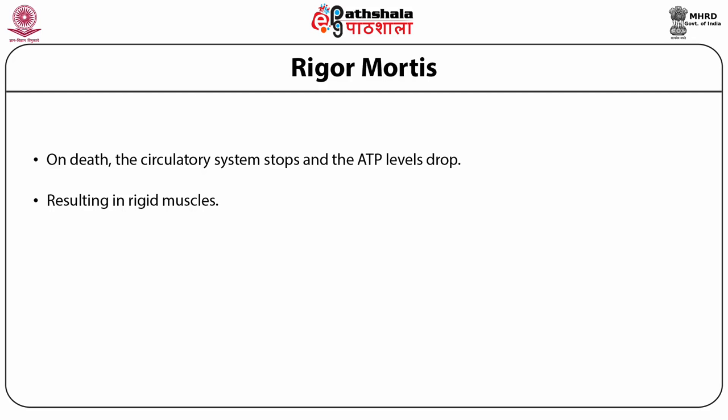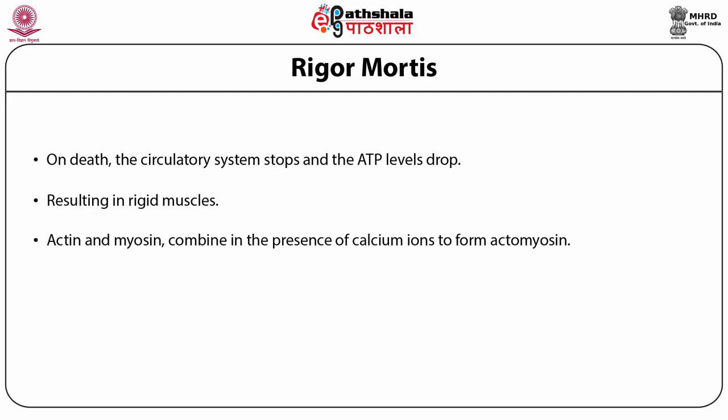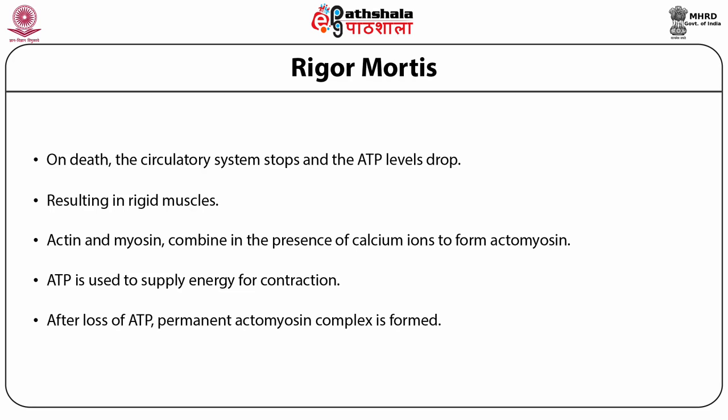Intact muscle consists of several proteins actively involved in contraction. The two major proteins, actin and myosin, combine in the presence of calcium ions to form actomyosin. ATP supplies the energy for contraction and later also the energy for the removal of calcium ions via a calcium pump. This breaks the actomyosin complex, leaving the muscle ready for further contraction. When ATP drops, calcium ions leak, forming actomyosin; however, there is insufficient ATP for the calcium pump to operate, so the actomyosin complex remains unbroken.